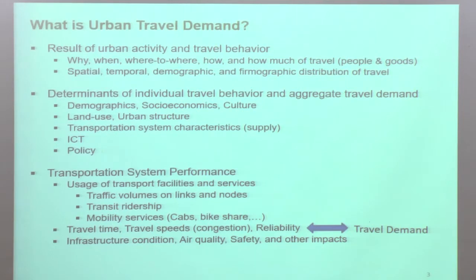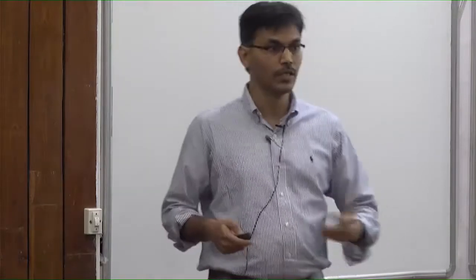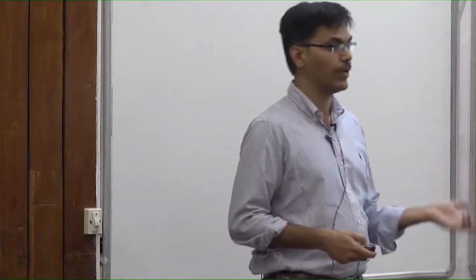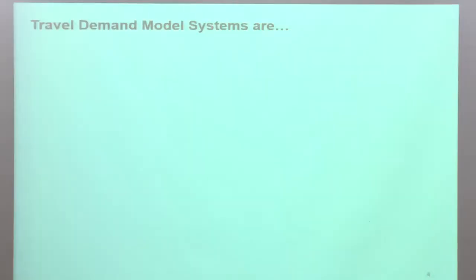We want to capture all of this in model systems. We can think of these model systems as theories of travel behavior, theories of group decision making within households, and theories of network games — all coming together into mathematical models that are empiricized using observed data and applied on a population to predict travel behavior for planning and policy applications.